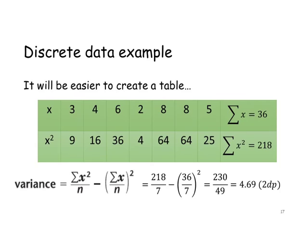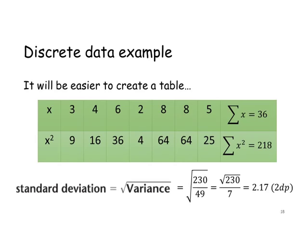We're now ready to use our formula. We substitute our numbers in: the sum of x-squared is 218, n is 7, and the sum of x is 36. If we put that in the calculator, we find it's 230 divided by 49, which as a decimal to two decimal places is 4.69. That's the variance. We also need the standard deviation, which is the square root of the variance. Taking the square root of 230 divided by 49 gives the square root of 230 over 7, which as a decimal is 2.17 to two decimal places.